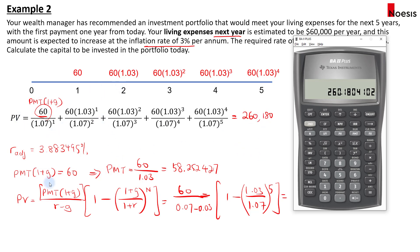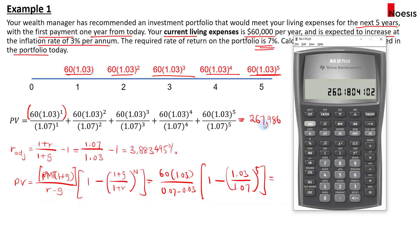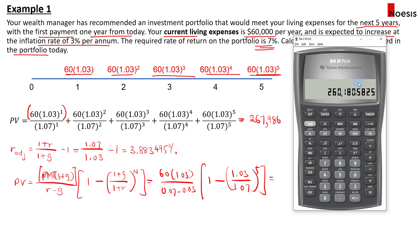Alternatively, you could have just taken the earlier PV of $267,986 and divided by 1.03 to get $260,180. This works because the relationship between the two scenarios differs only by one period of growth.